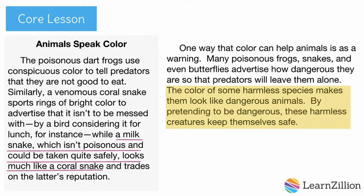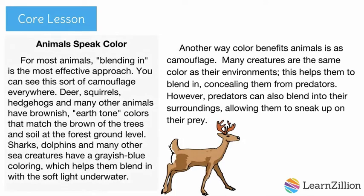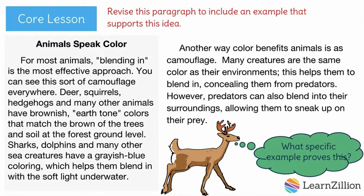That's a perfect example of an animal that pretends to be dangerous. There are many ways you could have written this. The important thing is that you used a specific example to prove this idea. Also, remember that we never just copy things from an article we use — always put ideas into your own words. Now that you know how to find specific examples and revise your writing to prove your ideas, let's practice with the next paragraph. Reread this paragraph and look in the article for specific examples that will help prove how color helps animals hide. Then rewrite this paragraph on your practice sheet. Pause the video now.